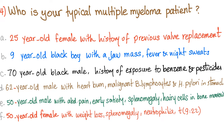Question number four: Who is your typical multiple myeloma patient? This is an epidemiology question. Is it the 25-year-old female with history of previous valve replacement? The 9-year-old black boy with jaw mass, fever, night sweat? Or the 70-year-old African-American guy with history of exposure to benzene and pesticides?